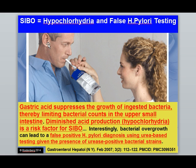A lot of people are doing breath tests for H. pylori, and you can actually get false positive results. The test can show positive based on what's in the small intestine, not just the stomach. When people have this SIBO problem, traditional diagnostic techniques can confuse the issue. I would always get a second opinion if you think you have H. pylori because you may not. Antibiotics may not be your best bet because they can actually cause SIBO.